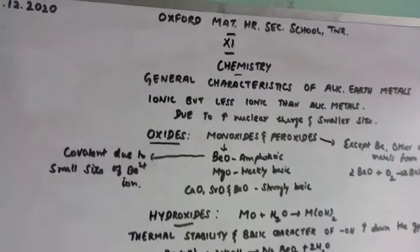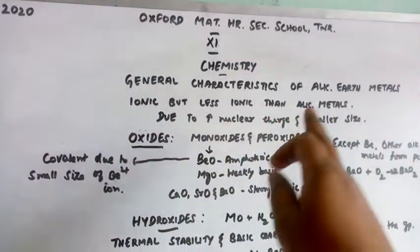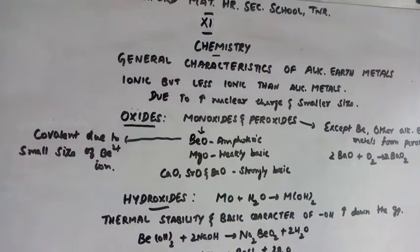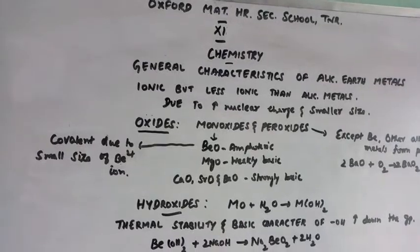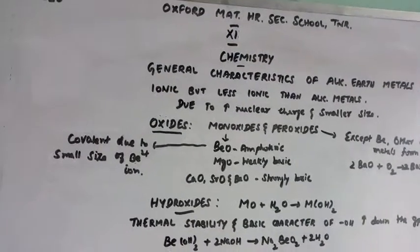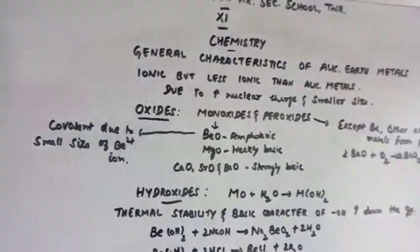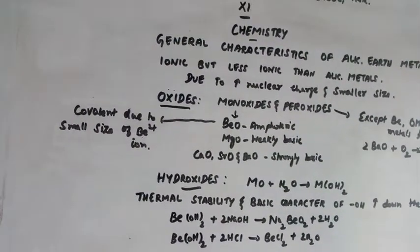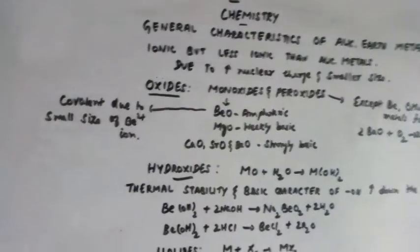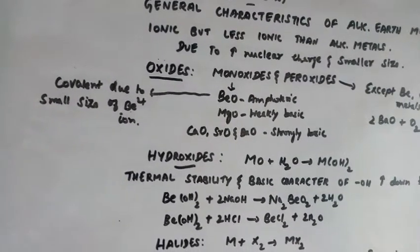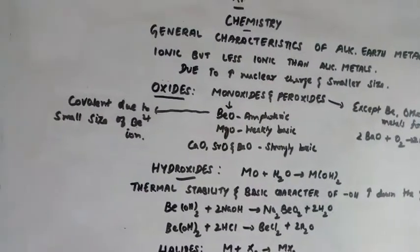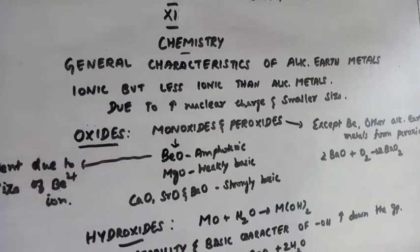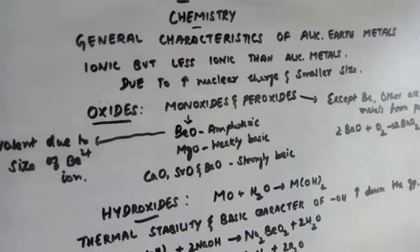Good morning students. Today we will start with the general characteristics of alkaline earth metals. Alkaline earth metals generally form compounds which are predominantly ionic in nature. Most of the compounds formed by alkaline earth metals are ionic, but compared to alkali metals they are less ionic.